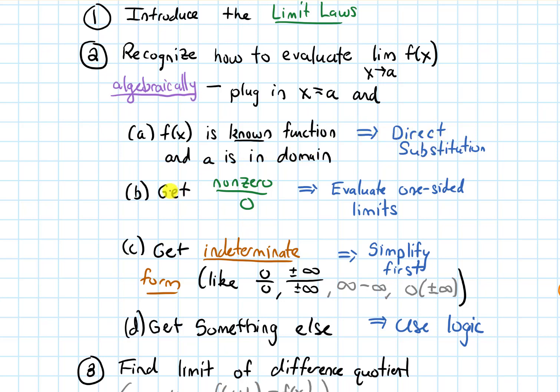The next case we'll look at is: what if you plug in and you get a non-zero over zero type thing? In that case, we'll evaluate one-sided limits.